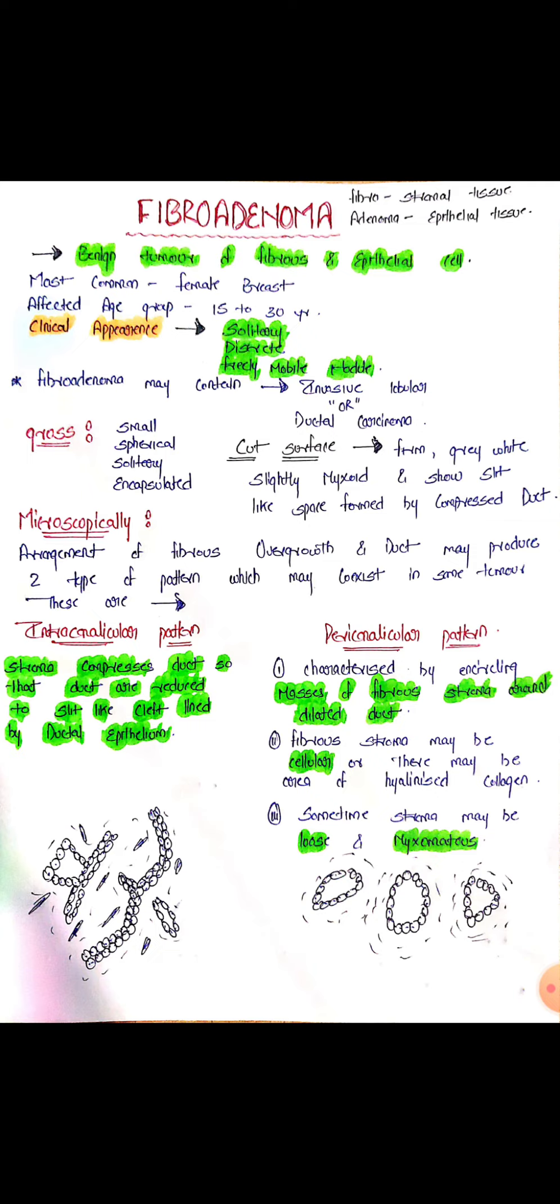In intracanalicular pattern, as we see in the diagram, the fibrous stroma shows overgrowth. This excessive growth compresses the surrounding ducts, creating a visual appearance as if the fibrous stroma has entered inside the duct. That's why we call it intracanalicular. Stroma compresses ducts so that ducts are reduced to slit-like clefts lined by ductal epithelium.